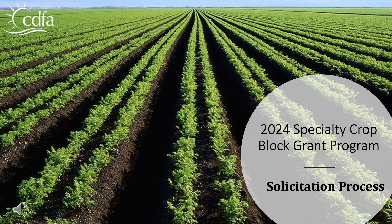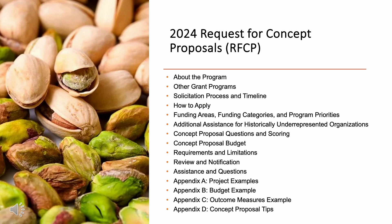Hello and welcome to the 2024 Specialty Crop Block Grant Program, or SCBGP, webinar. This first presentation will cover the solicitation process and will provide an overview of the entire grant solicitation process. In preparing to submit a concept proposal, the first and most important thing to do is read the Request for Concept Proposals, or RFCP. What we are reviewing today is covered in greater detail in the RFCP for the program.